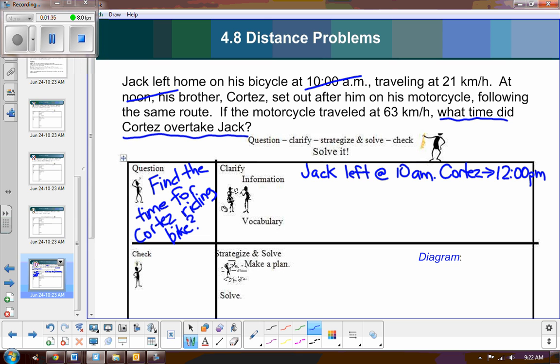Now the next fact, Jack was traveling, so we know Jack's rate is 21 kilometers per hour. Cortez was on a motorcycle, and the motorcycle traveled, so we know Cortez's rate is 63 kilometers per hour. Great. Now I have that fact, and it looks like I have all the facts written down.